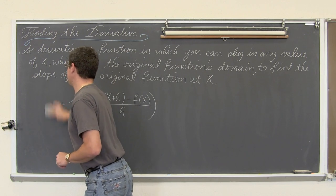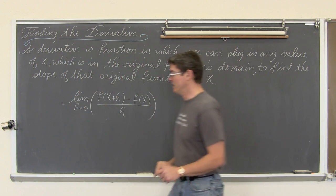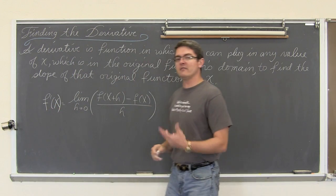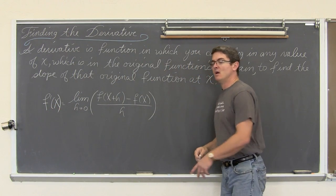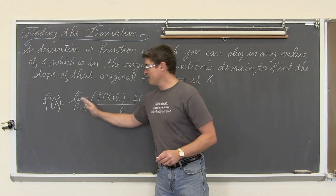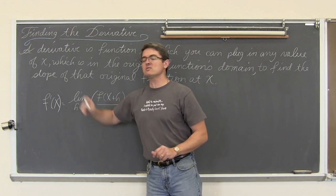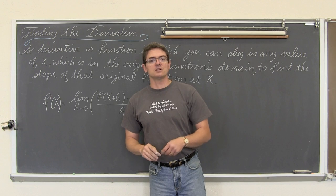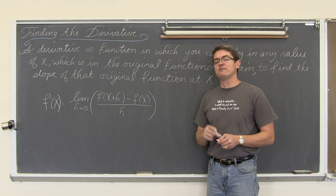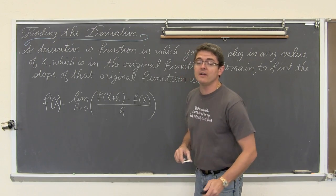We can't call it the slope of the tangent line. We are going to call it the derivative, or f prime of x. So we are going to be given a function, run it through the difference quotient, find a limit as h approaches zero, and that will be the derivative of the original function. That derivative will tell us the slope of the original function at any given value of x.